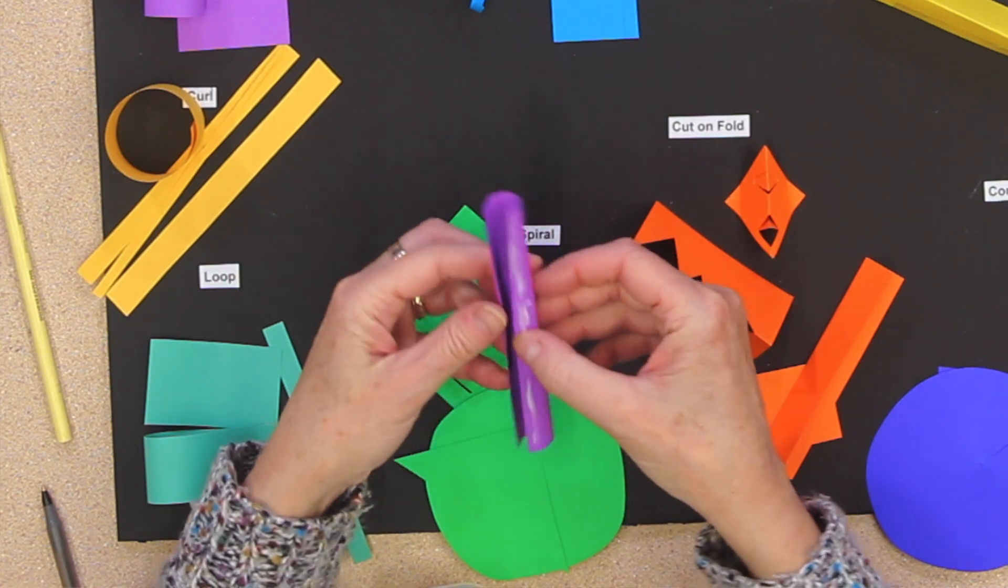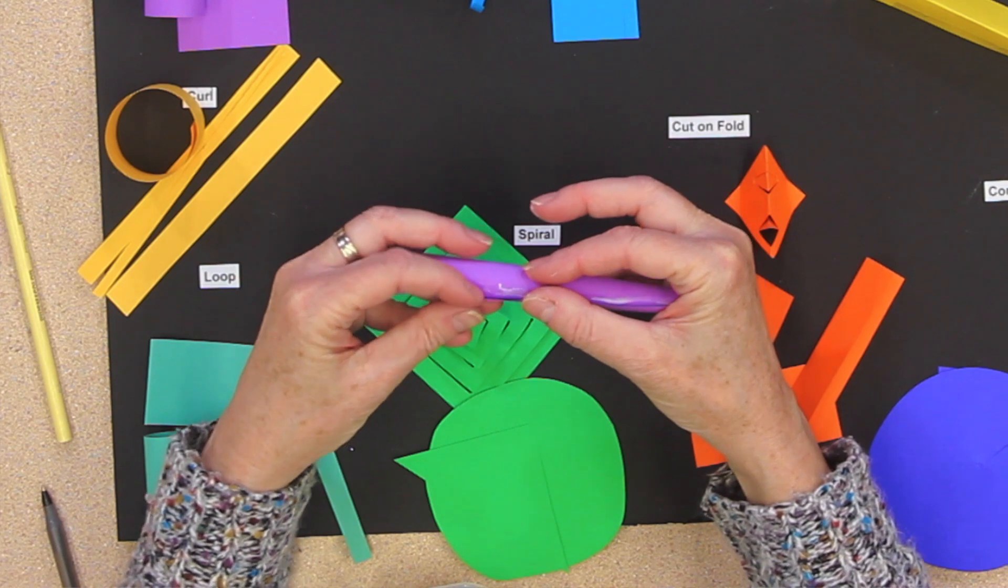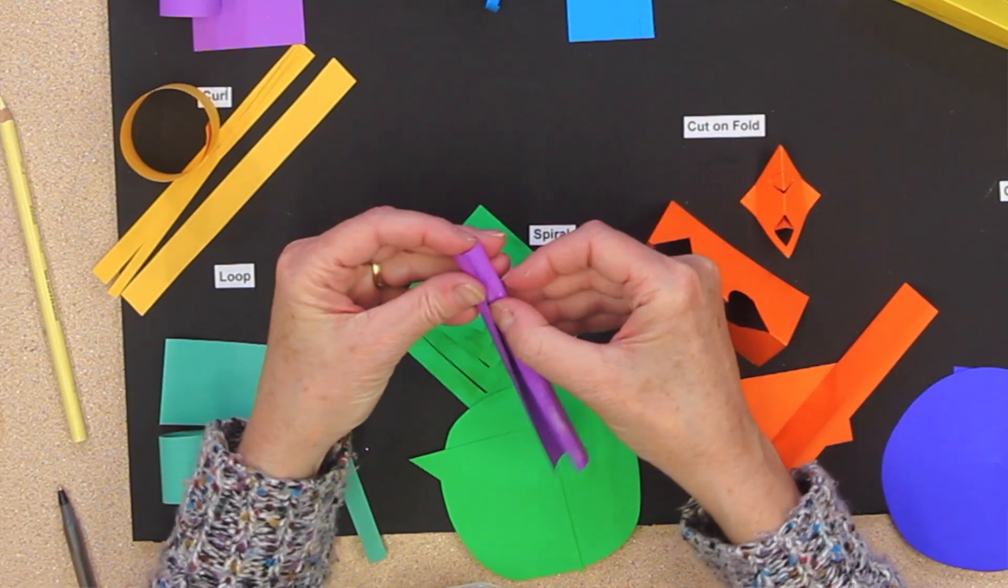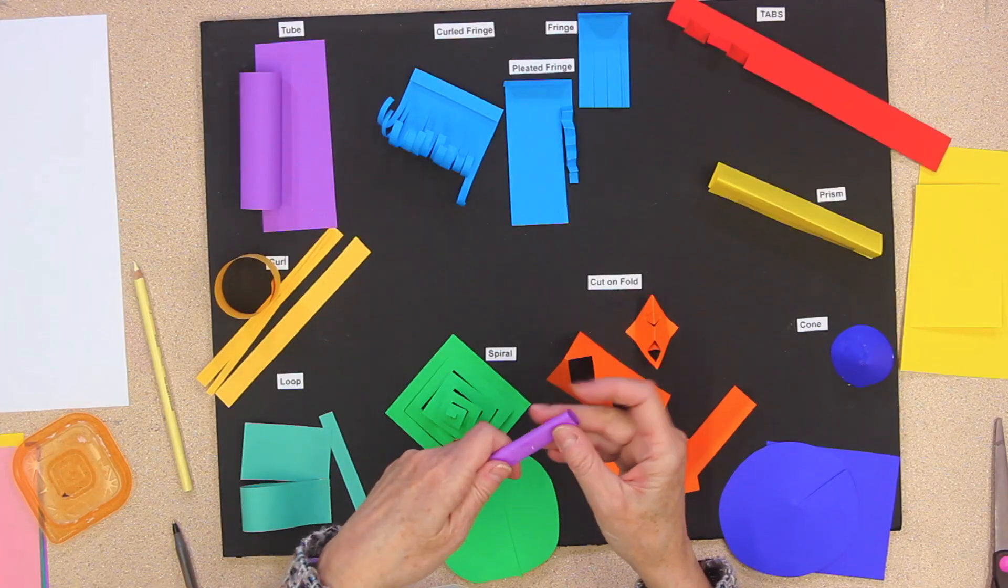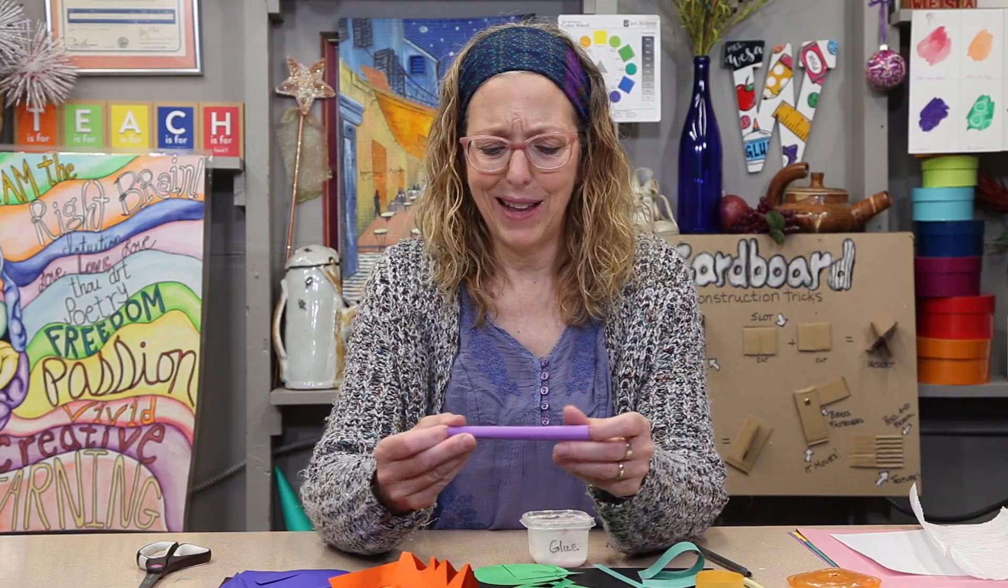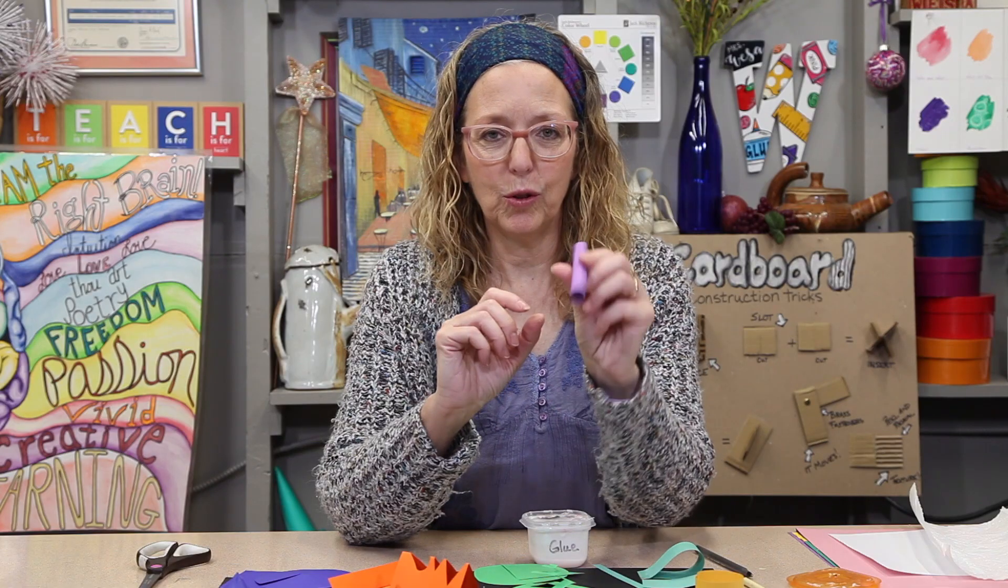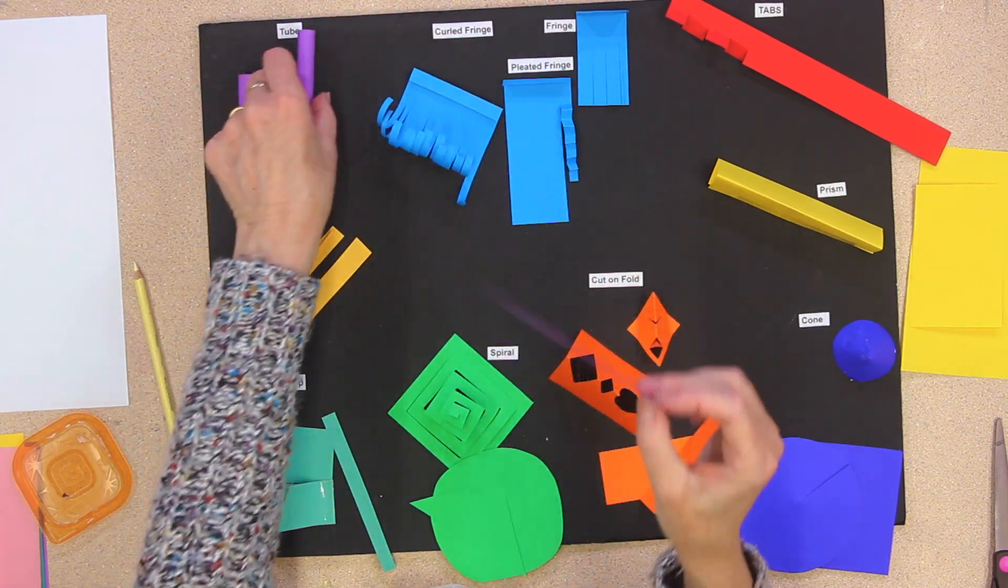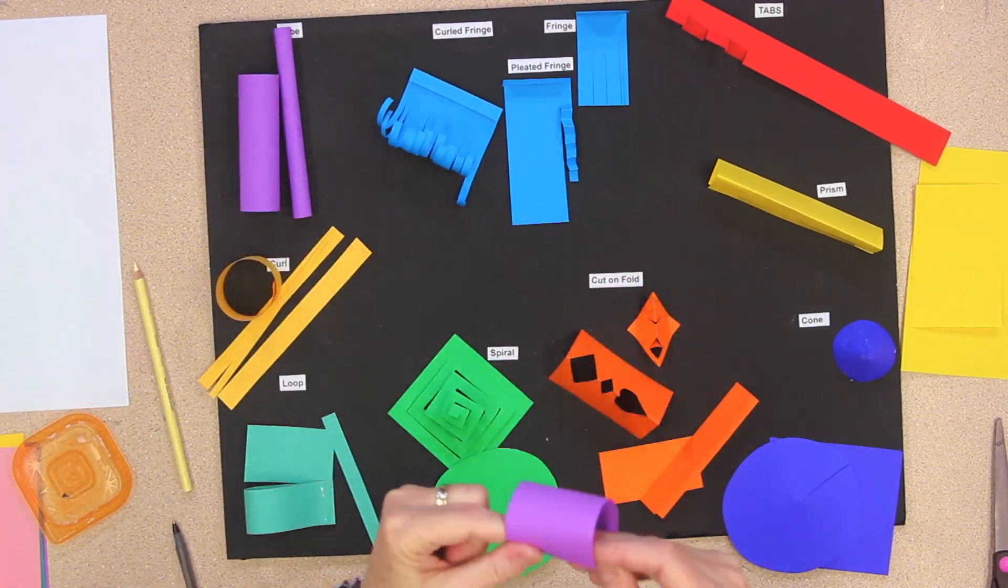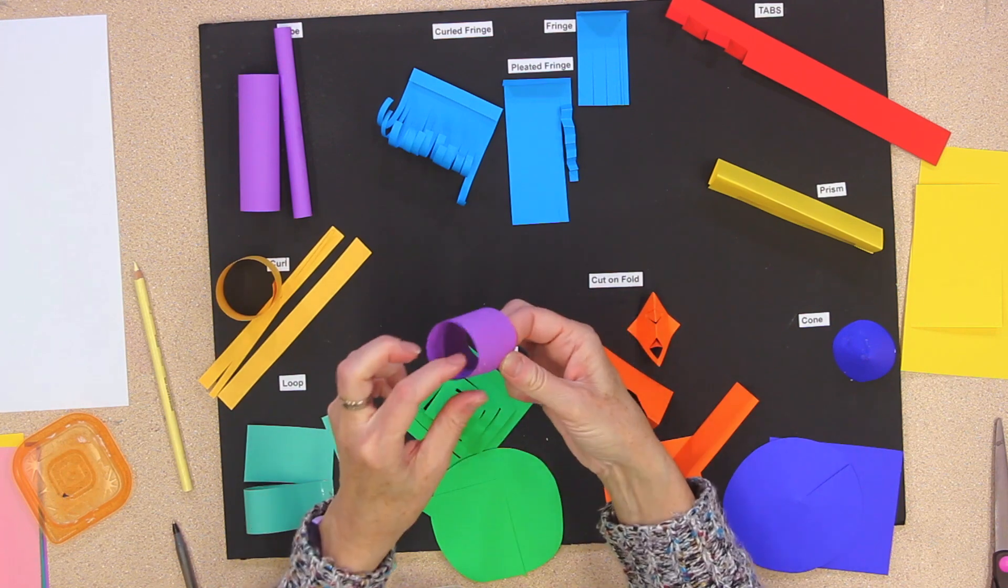You don't have to do it exactly how I do it. I'm just showing you one way. Maybe you can come up with a better way. And then I'm going to connect the part that's glued. Don't worry if you're getting glue everywhere. That's the fun of it. Here's my skinny tube. Now, I'm going to take a fatter piece of paper. And there you have it.